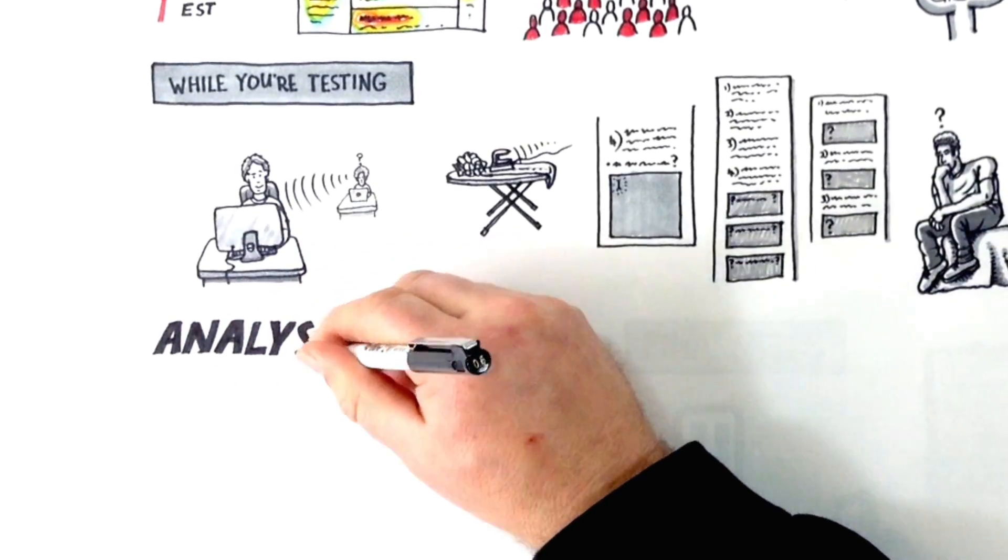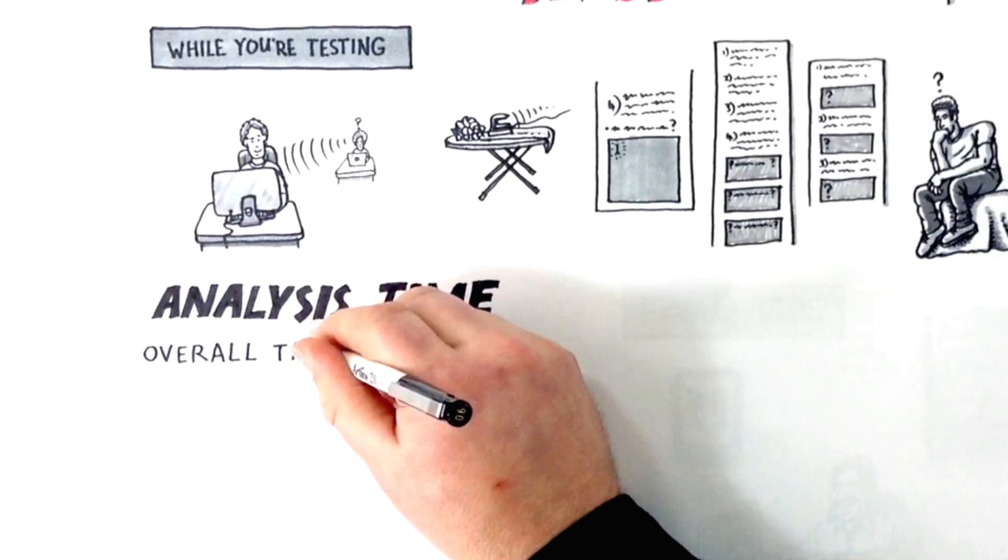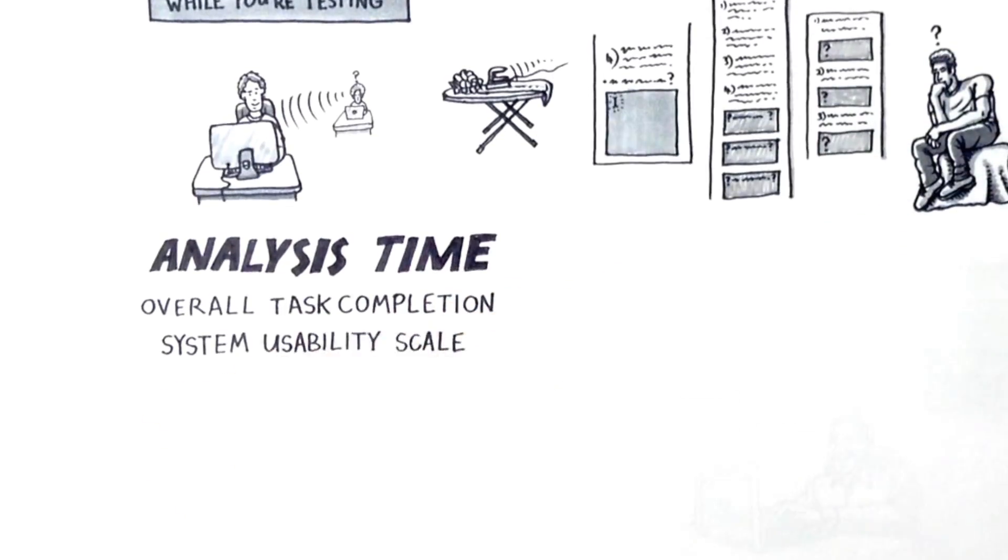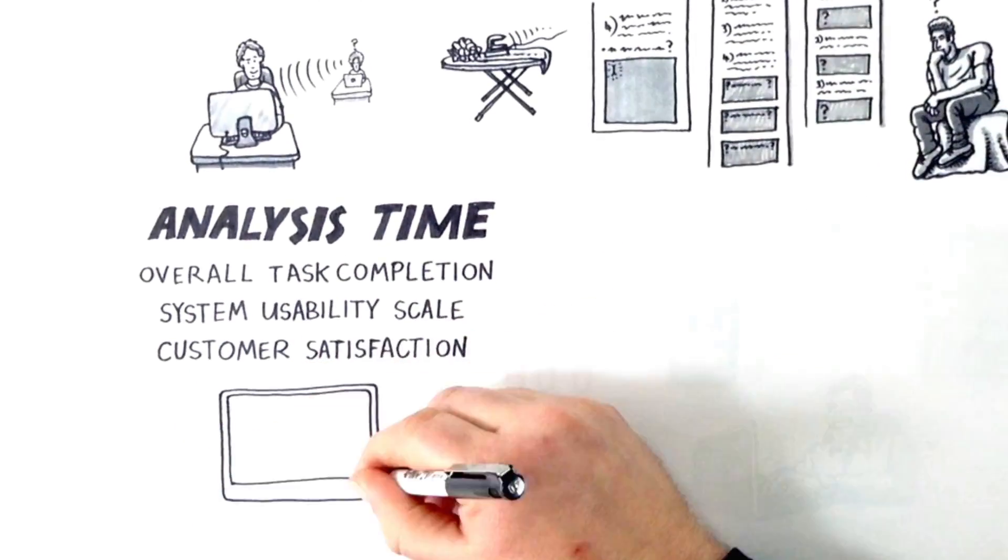Once you've collected your results it's time for analysis. Start by looking at some overarching metrics such as overall task completion, the system usability scale and customer satisfaction. These will give you a sense of the overall performance of the product.